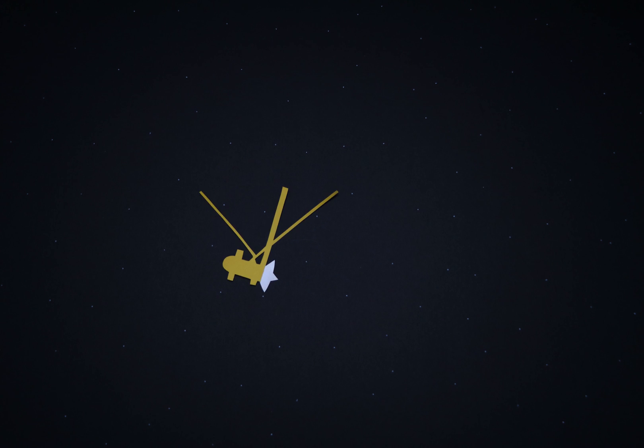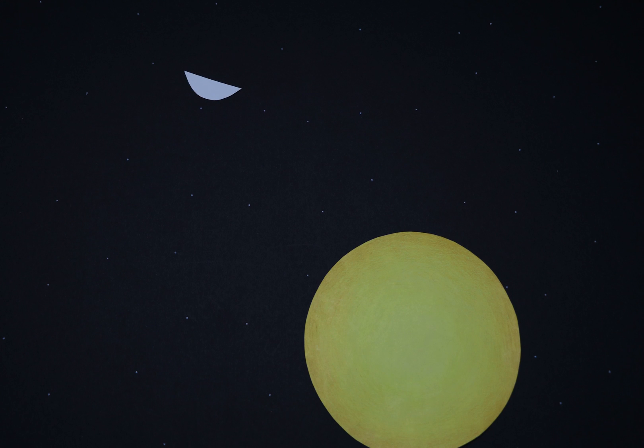When Cassini began traveling to Saturn, it wasn't alone. The European Space Agency added the small Huygens probe to NASA's spacecraft and, shortly after arriving on Saturn, dropped the probe onto the largest of Saturn's moons, Titan. Huygens successfully landed and it was the furthest any spacecraft had ever landed from Earth.